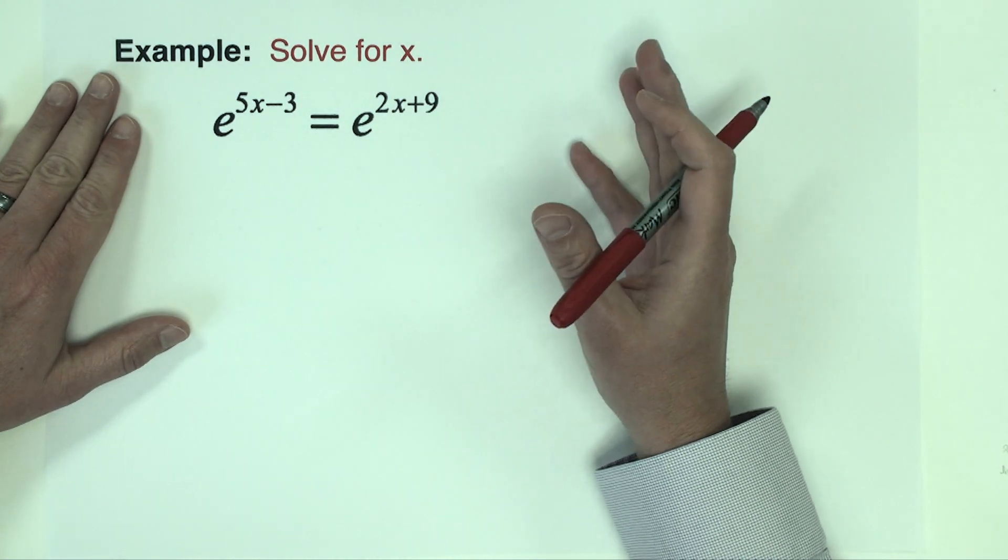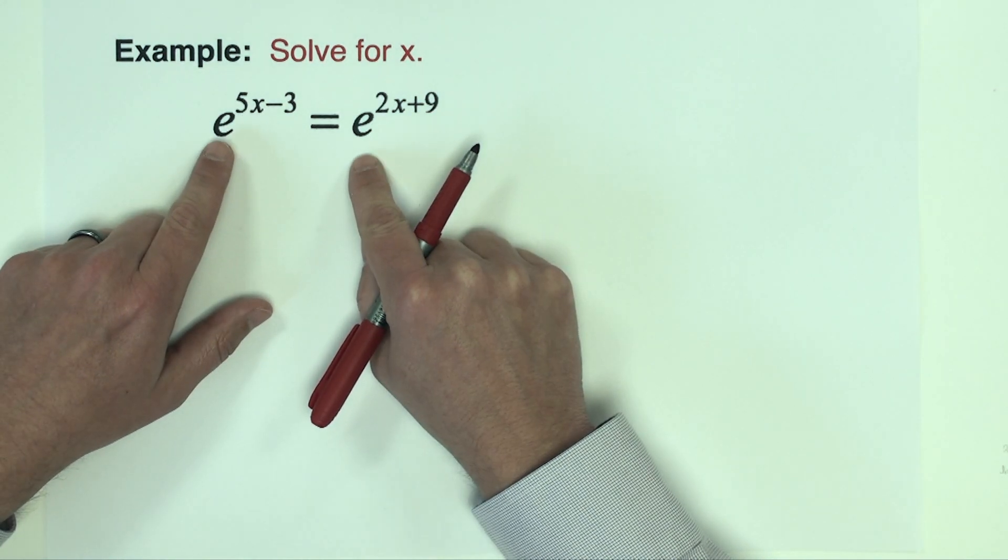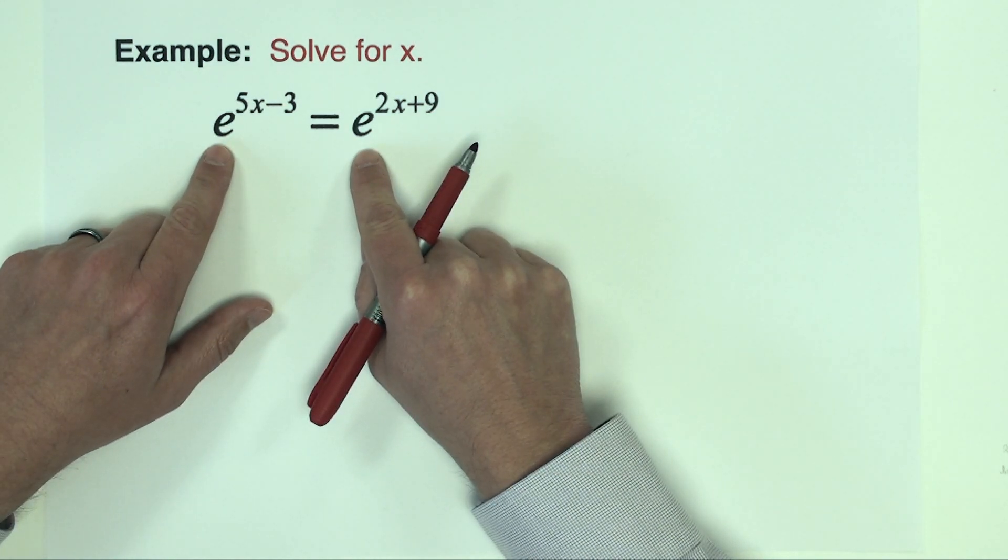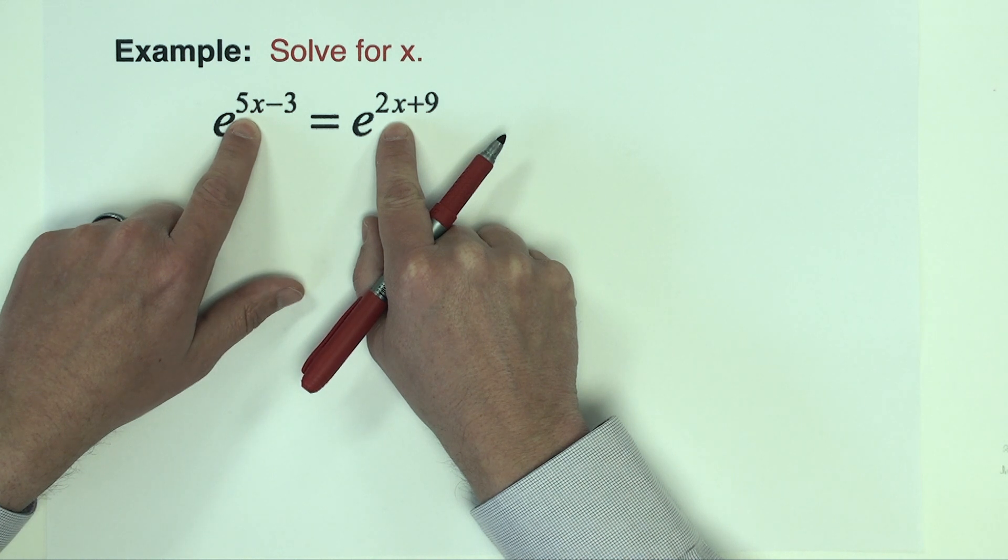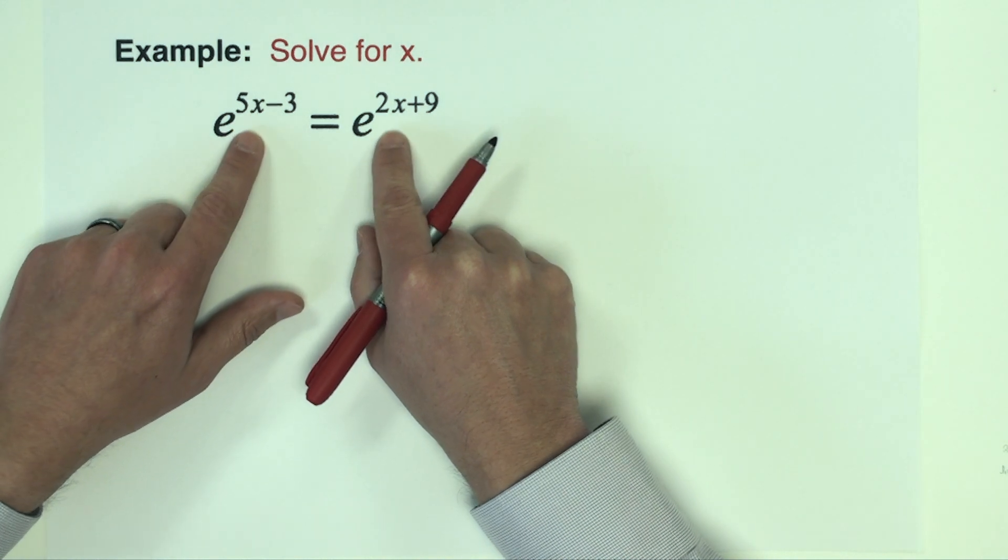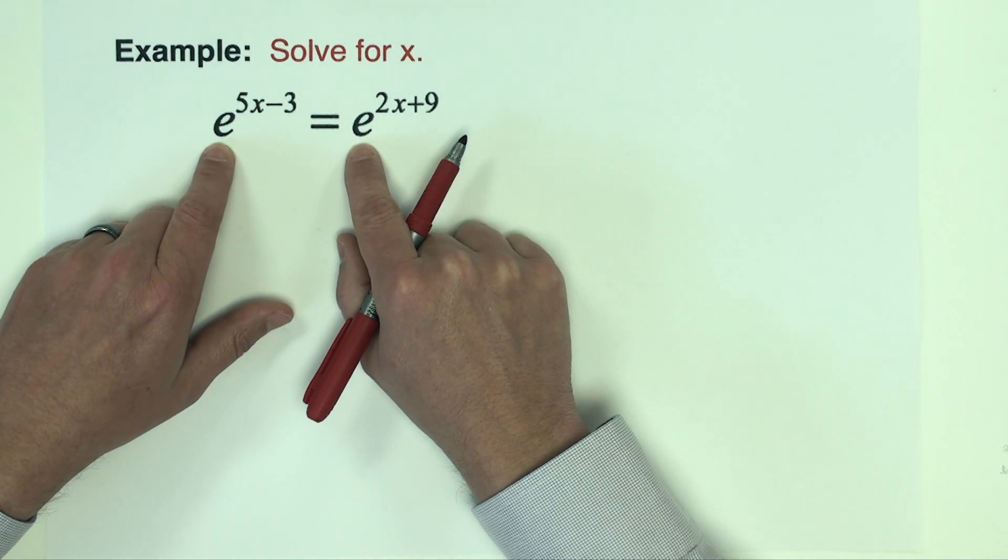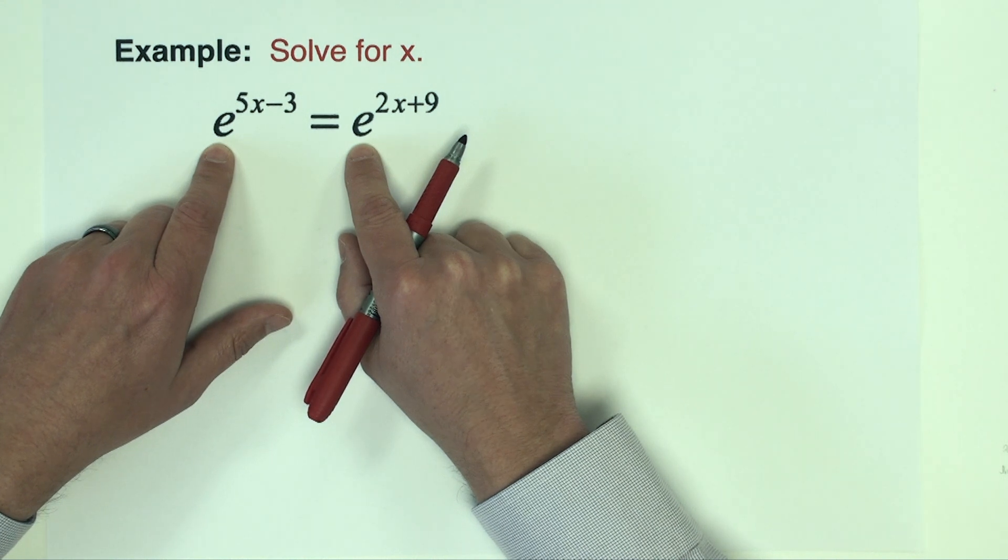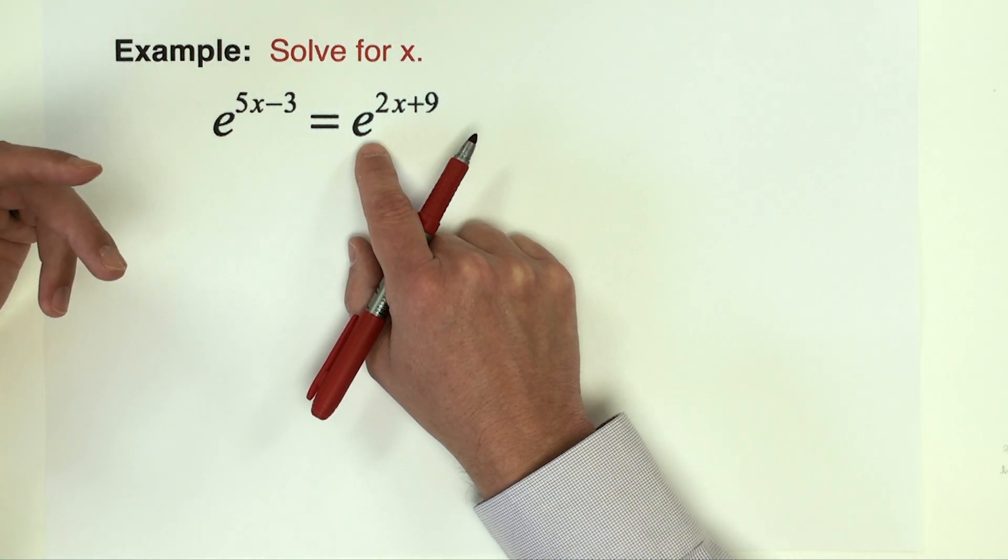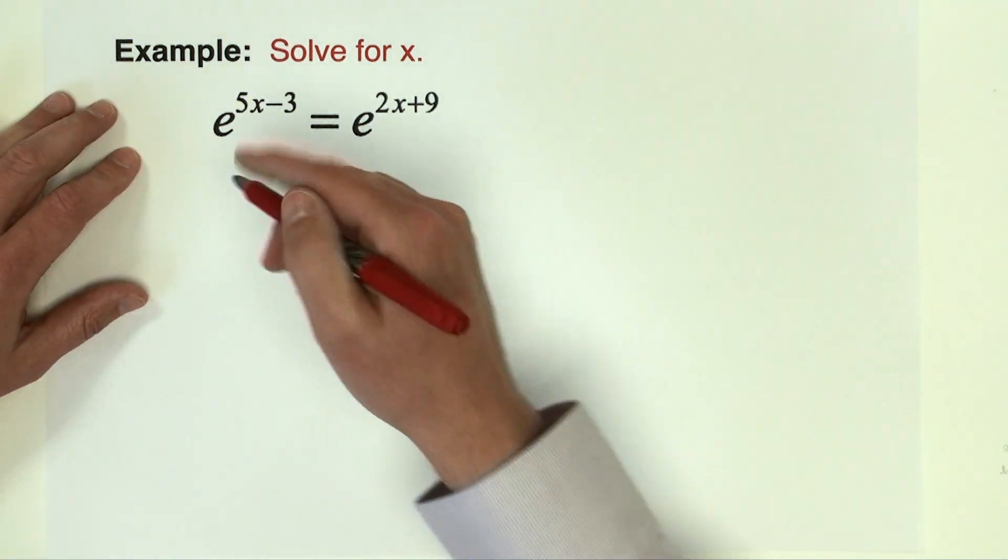All right, final example in this video is going to involve an e on both sides of the equation. So we saw one like this in the last video where we had the variable on both sides of the equation and it was pretty rigorous algebraically just to solve for the x. Because the bases are e though in this problem, this is actually going to be quite easy to do. The first step, like any step in these problems, if the e is by itself which it is, is I'm going to take a natural log of both sides.